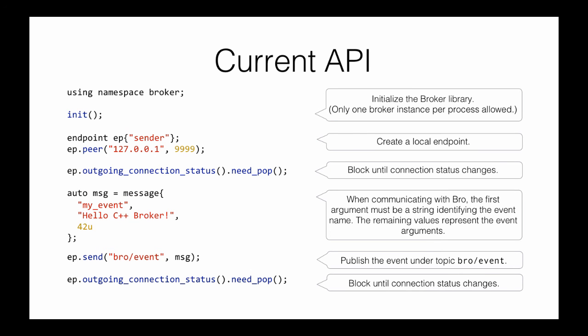The current C++ API starts by initializing the library and creating your own endpoint — essentially one node. You can connect to another node by peering, which is just a TCP connection. Then you block until there is a change in the outgoing connection status. You may then send a message to a topic — it's all topic-based publish/subscribe. On the topic 'bro/event', Bro looks at the first argument as the event name and takes the remaining values as arguments to an event handler.